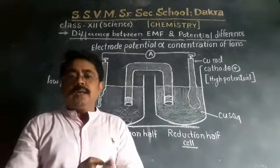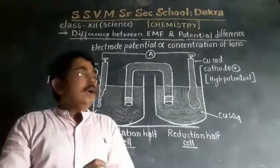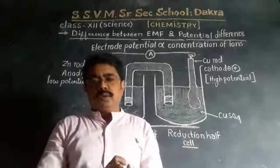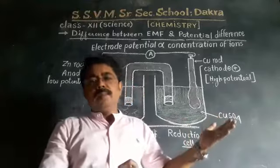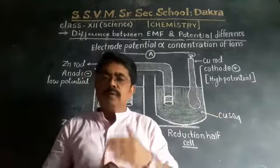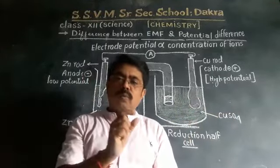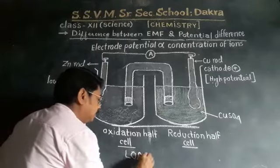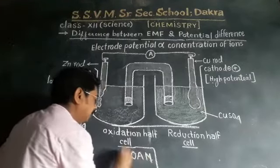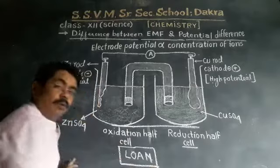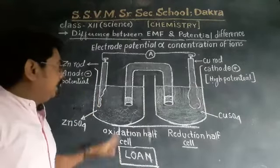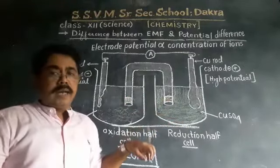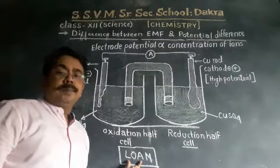In the previous lecture, I told you a trick to remember the charge on electrodes — which electrode will be positively charged, which will be negatively charged, which will be cathode, which will be anode. For that, you can remember the word L-O-A-N. From this word, you can identify the cathode, anode, and their charges.